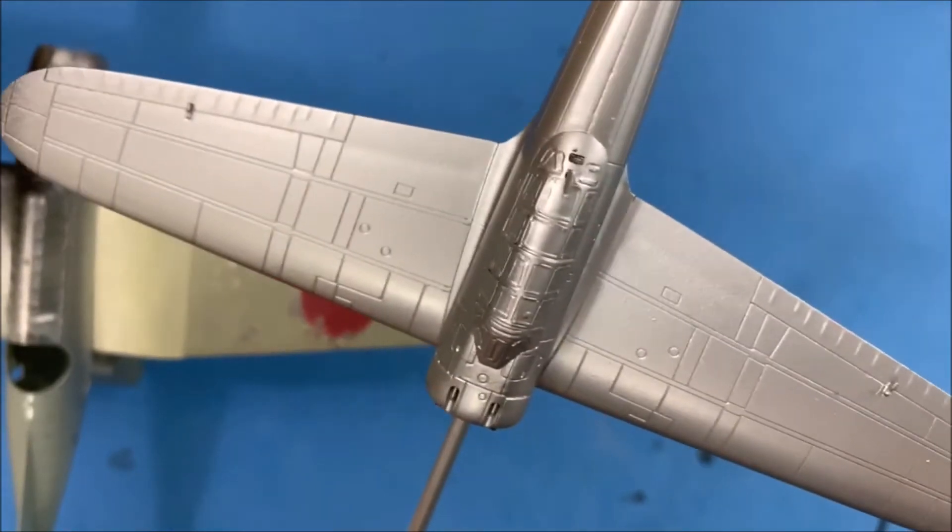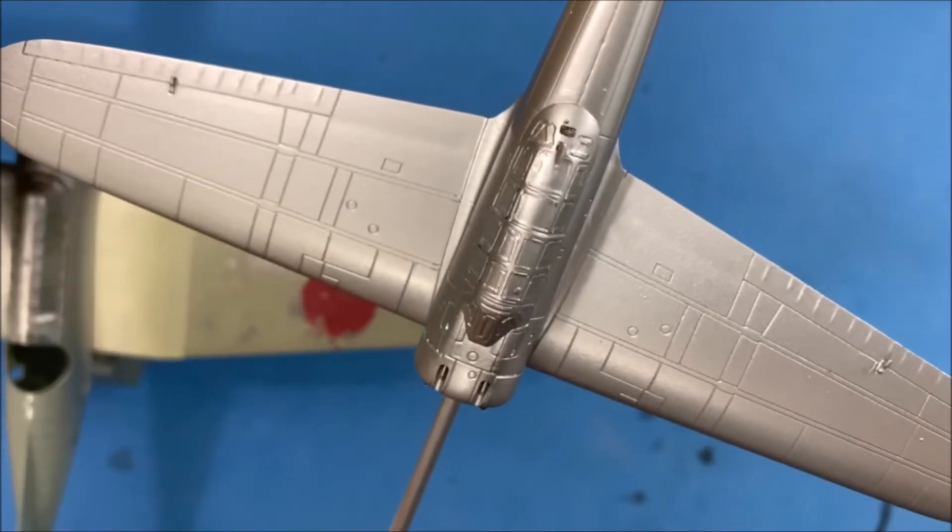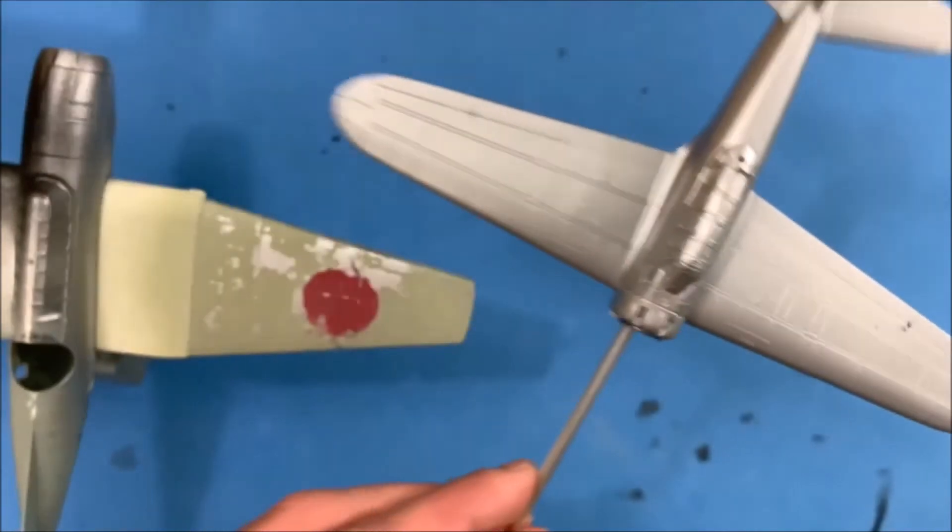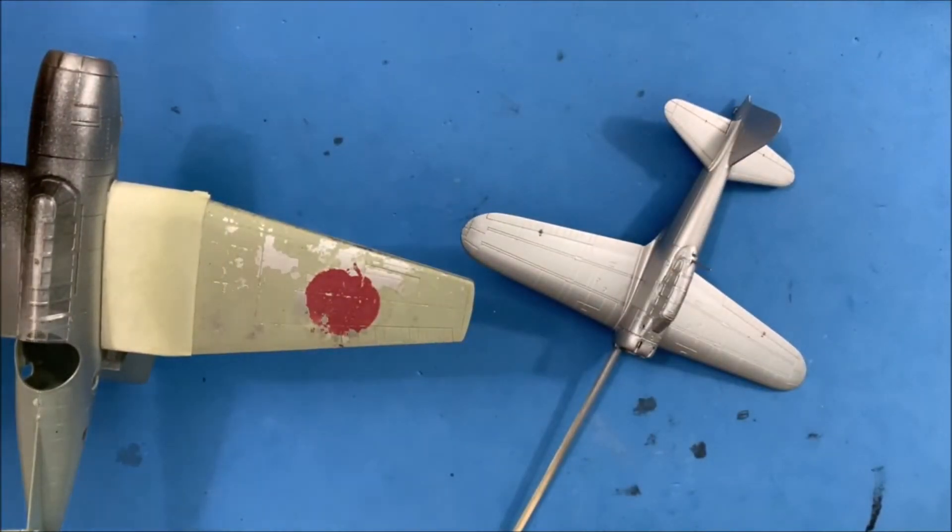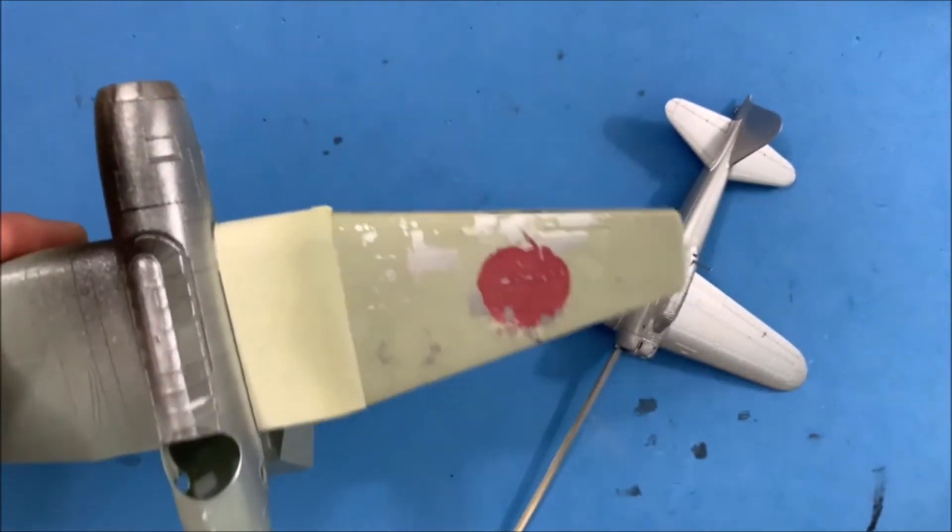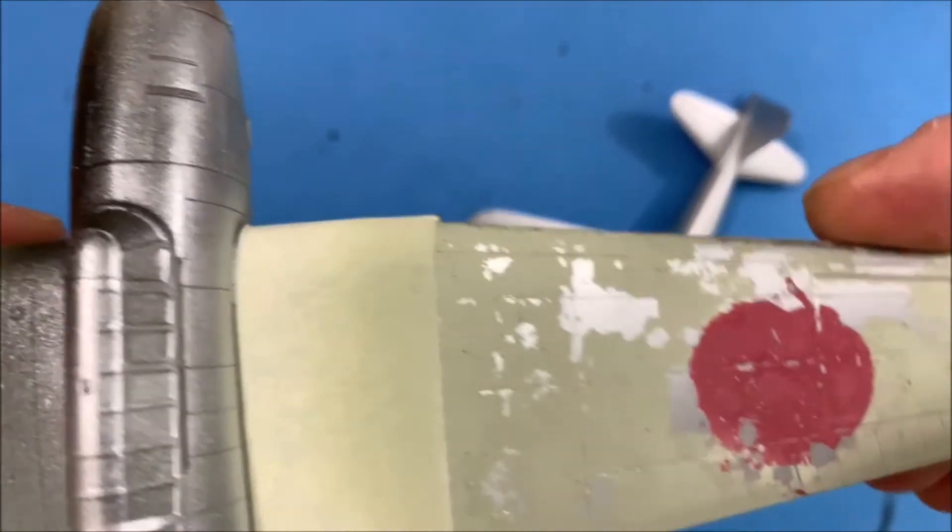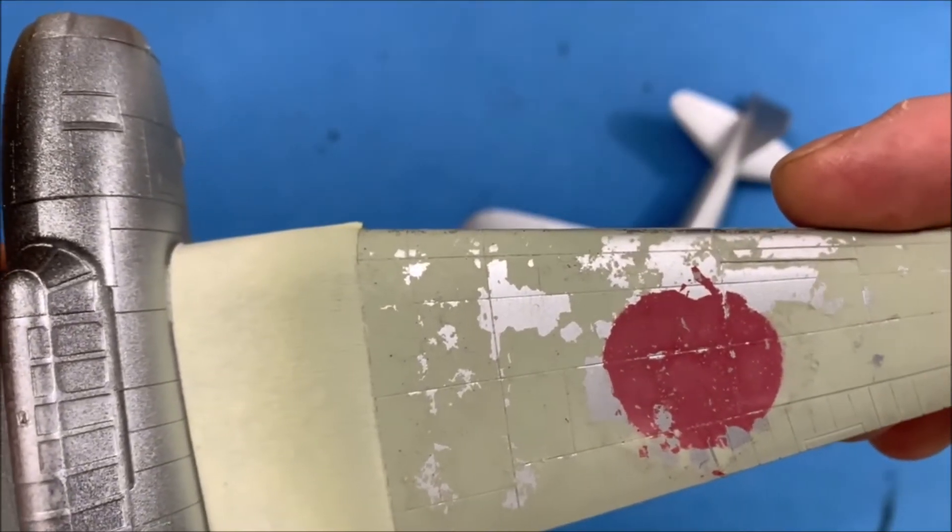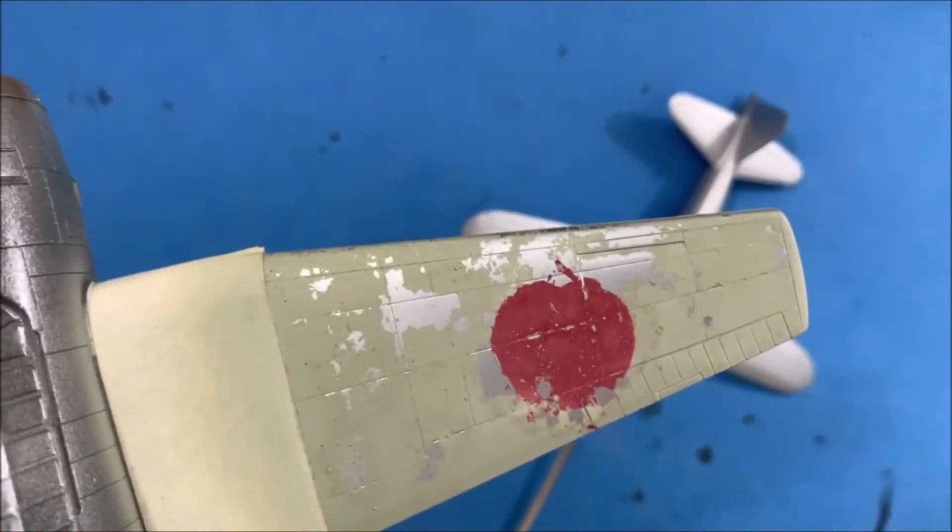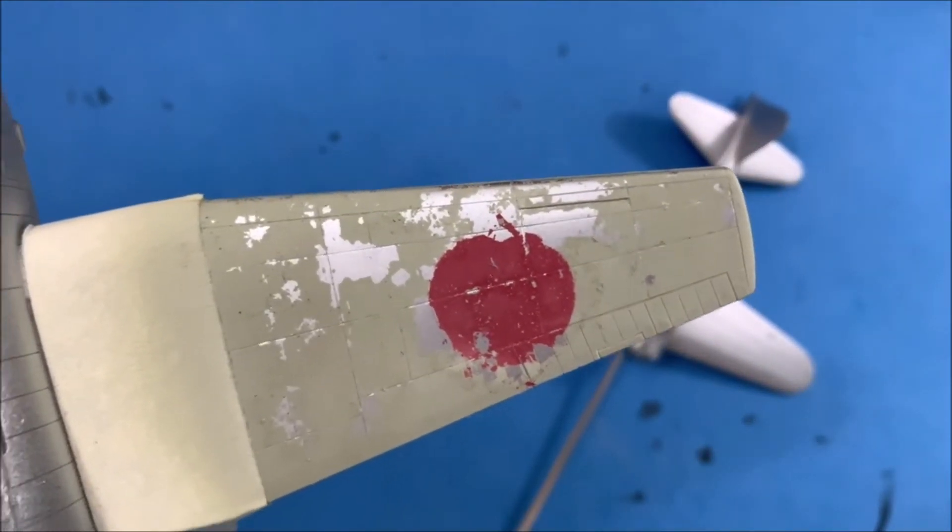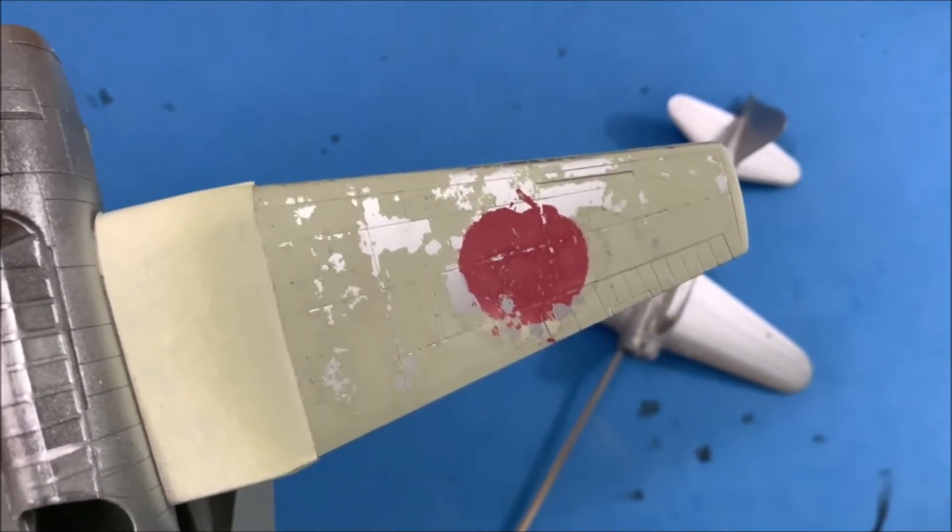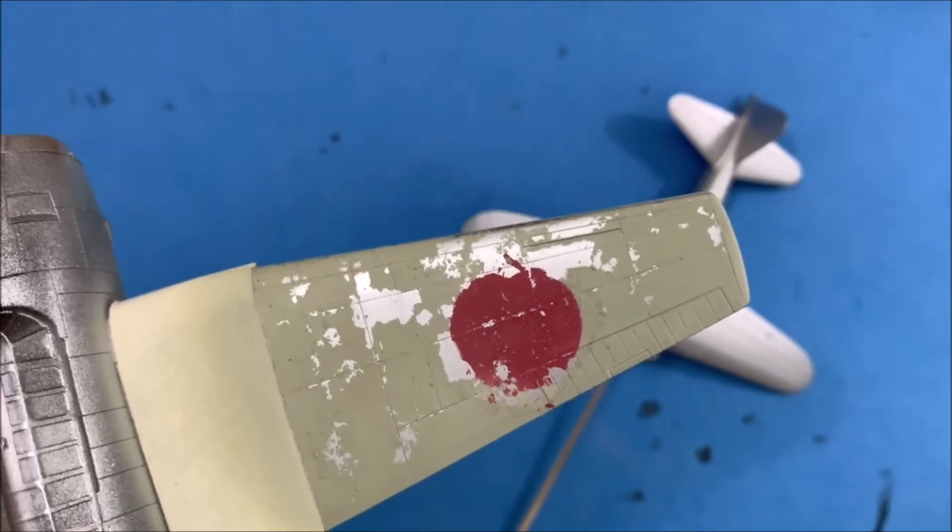So the next step is going to be to start the pre-weathering process. I started doing a little bit of experimenting here with this paint mule. As you can see it's got that bare metal silver under it and then I painted the top color. Instead of using a decal, I also made a mask and I painted the Japanese roundel on there. I was just kind of playing around just seeing how things chipped and everything.